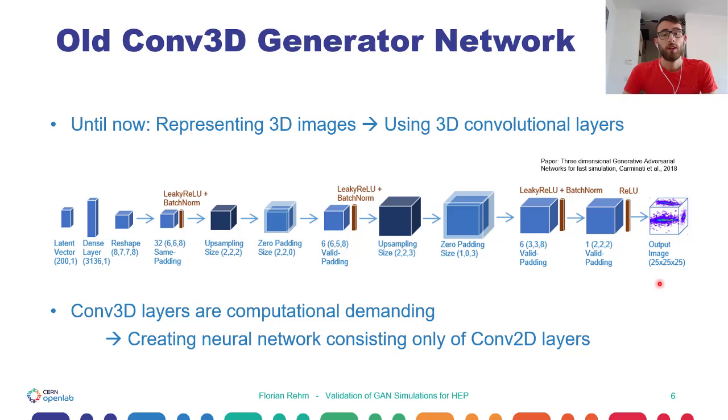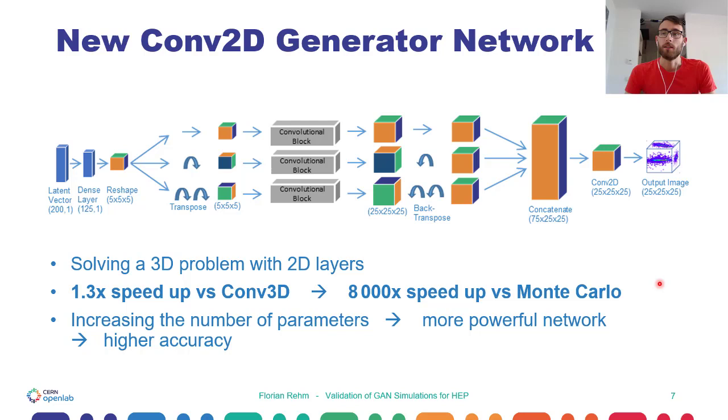But convolutional 3D layers are computationally demanding. Therefore, we created a new neural network architecture consisting only of convolutional 2D layers. I don't want to go into the details of the architecture, but with this architecture, with using three branches and some transposing, we are able to solve three-dimensional image problems with only two-dimensional convolutions.